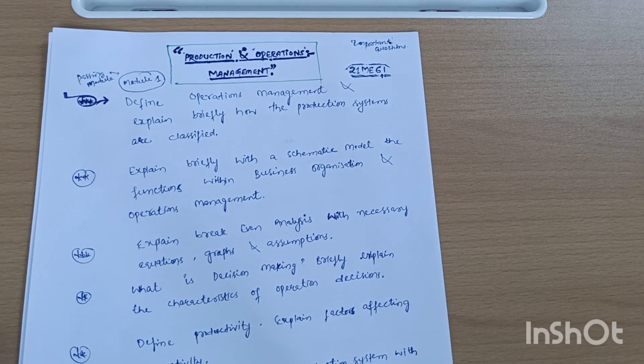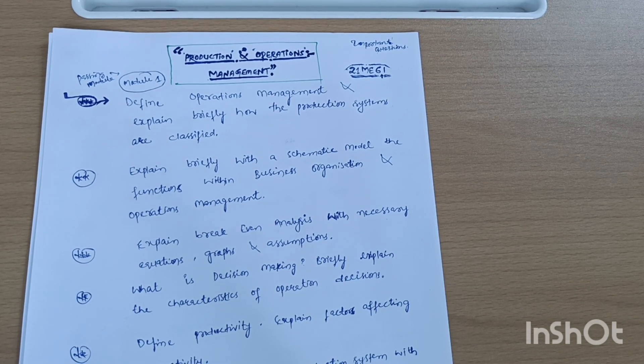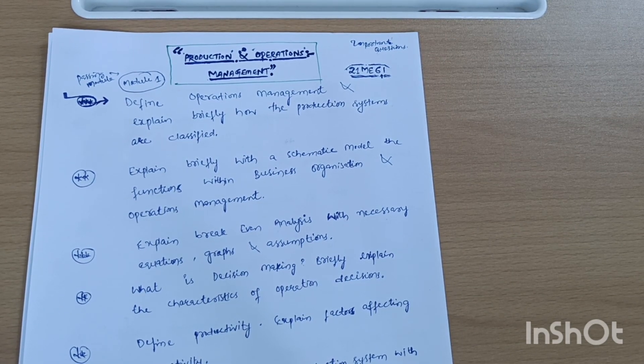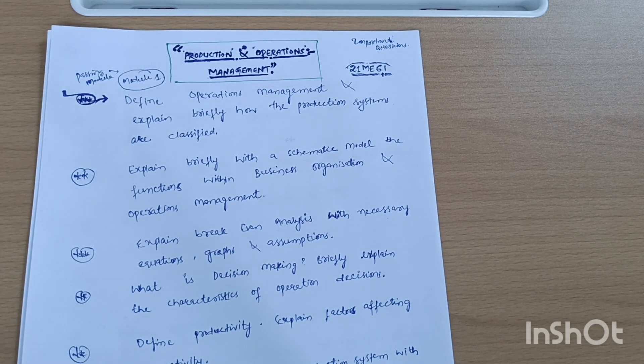Prepare well and try to understand the concepts in your own words so you can write down a lot of theory in the examination. Try to fill more than 25 pages in this subject so you will get good scores. Thank you for watching my video. Share this video to all your friends who are searching for important questions of Production and Operations Management subject. Thank you.